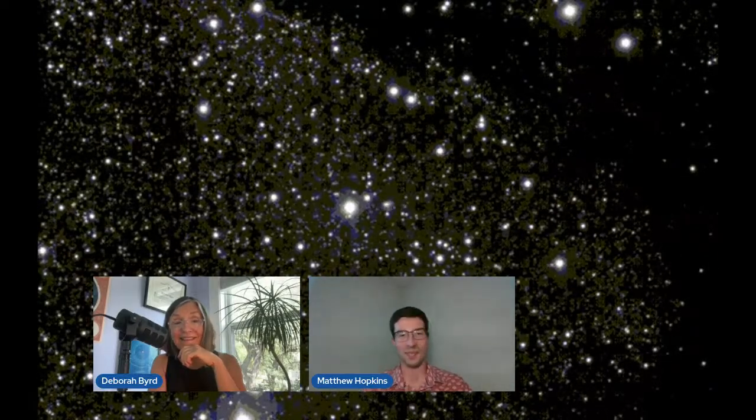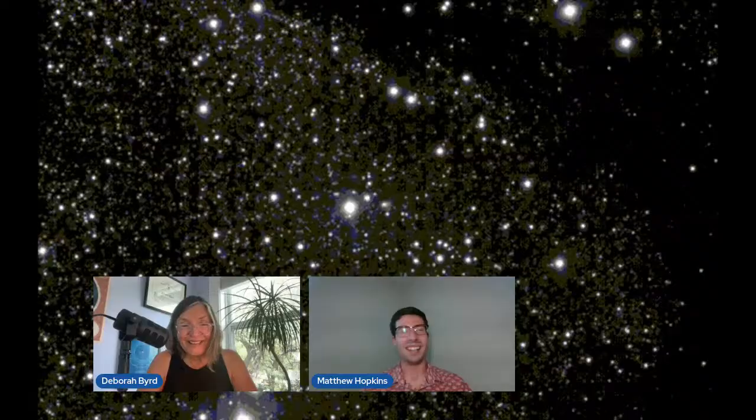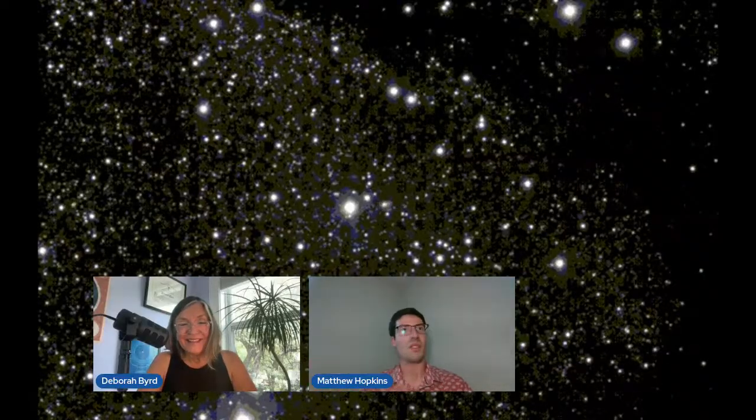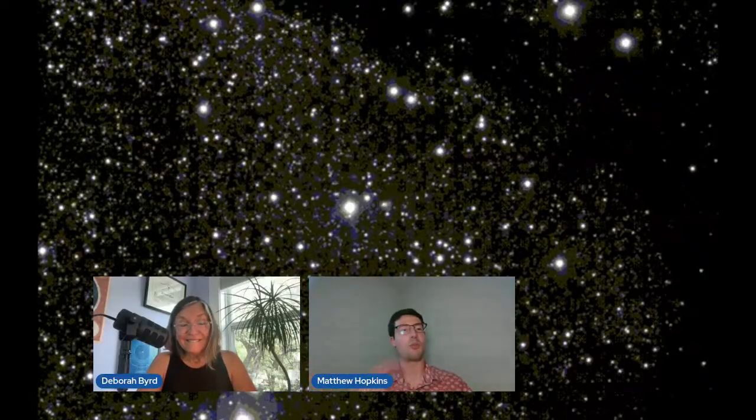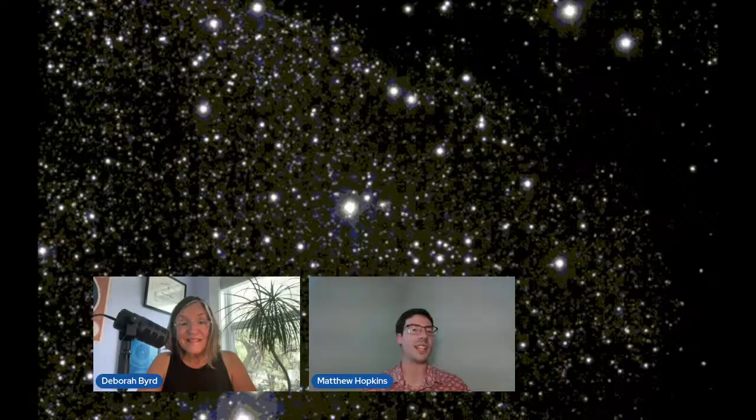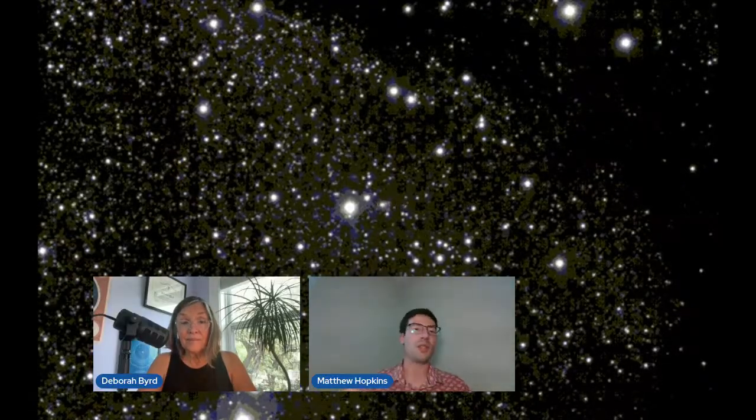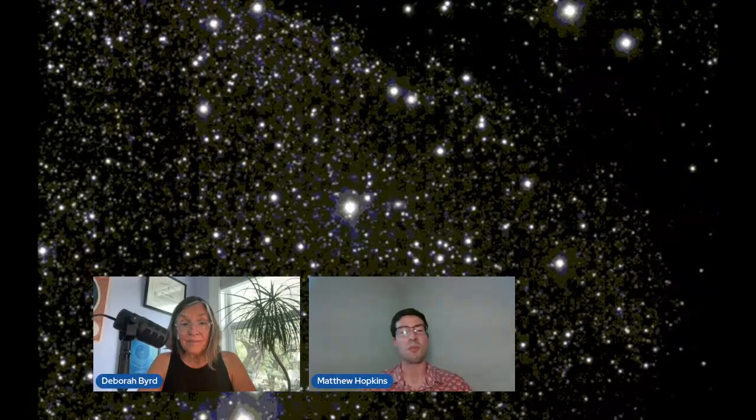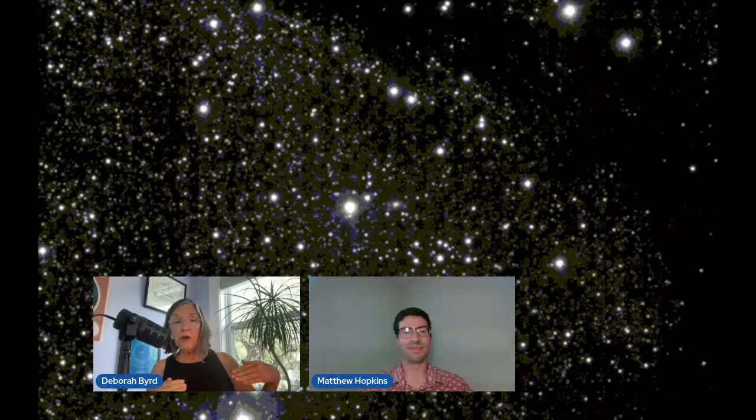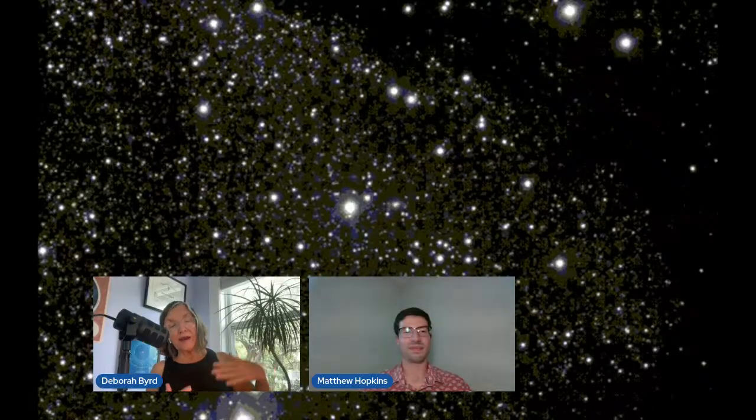But don't worry, 3I is not coming anywhere near us. We don't need to worry about that. They image the sky every night and then can look for moving objects. They look for new points of light and things that are moving between nights and try to fit orbits to them. And this one, when they fit an orbit, they realized it must have come from outside the solar system.